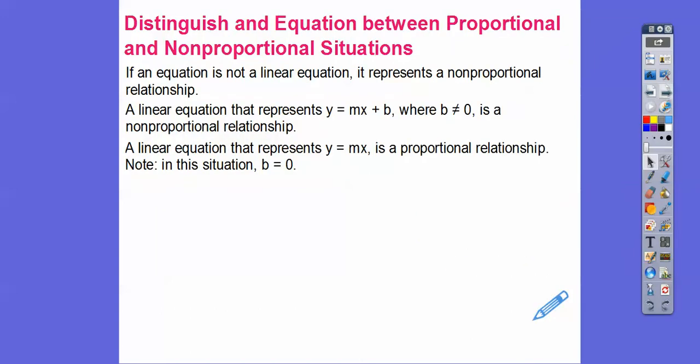If an equation is not linear, remember it represents a non-proportional relationship. We'll talk more about curves, particularly parabolas, in integrated math 1 next year. A linear equation that represents y equals mx plus b, where b is not 0, is a non-proportional linear relationship — it's just a line that doesn't go through the origin. If we have an equation y equals mx with no plus b, that's a proportional relationship because b equals 0.